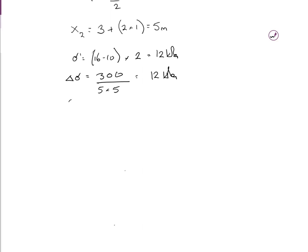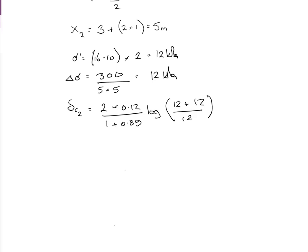The consolidation for layer 2: dc₂ = 2 × [0.12 / (1 + 0.89)] × log[(12 + 12) / 12] = 0.0382 meters. Both sigma prime and delta sigma work out to 12 kPa, which is a convenient coincidence.